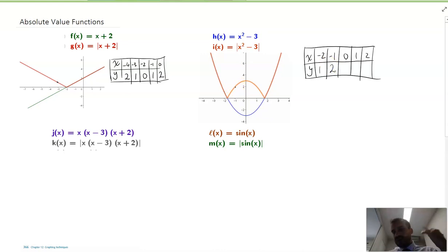Now, 0, 0 squared is 0. Minus 3 is minus 3. But, the absolute value of minus 3 is 3. And so on and so forth.